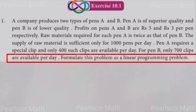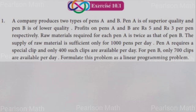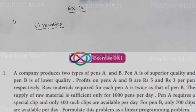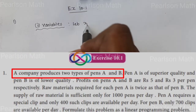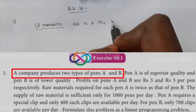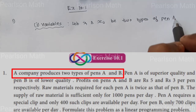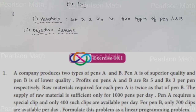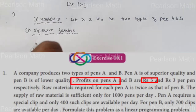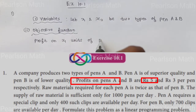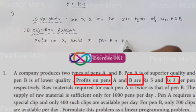Formulate this problem as a linear programming problem. There are two types of pens, so we define decision variables X1 and X2 as the number of pen A and pen B produced. The objective function is based on profit: profit on X1 units of pen A is 5X1, and profit on X2 units of pen B is 3X2.